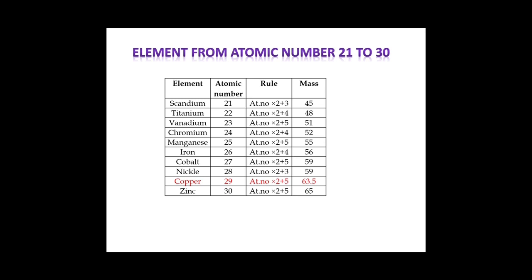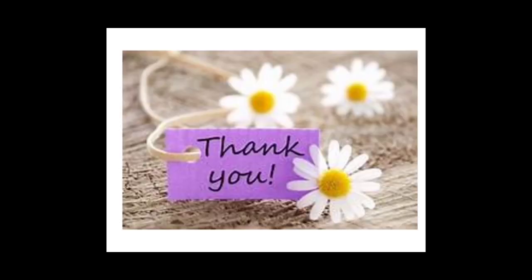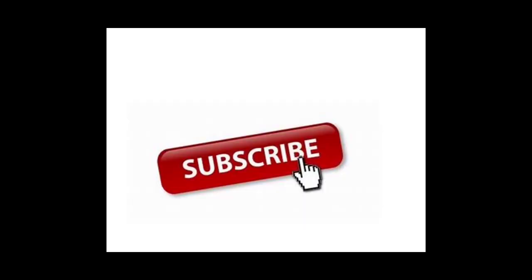Titanium has atomic number 22 — you have to multiply it by 2 then add the respective code number to get the mass number. Thank you students. Please subscribe to my channel to get more.